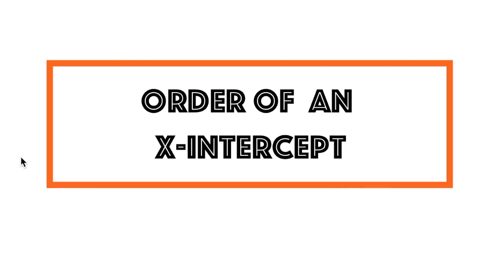The order of an x-intercept is a very useful characteristic that can be used to help understand the graph of a given polynomial. This characteristic is easy to spot but powerful when it comes to analyzing polynomials.